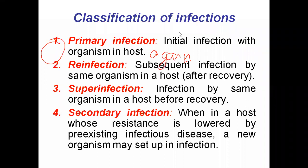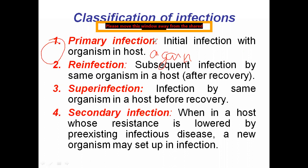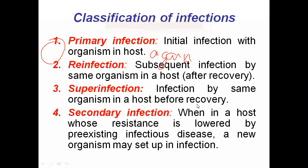Superinfection is infection by the same organism in a host before recovery. The patient is still taking treatment and has not fully recovered, yet the infection worsens again — for example, when a person appears to be recovering but their condition suddenly becomes worse. That is called superinfection.